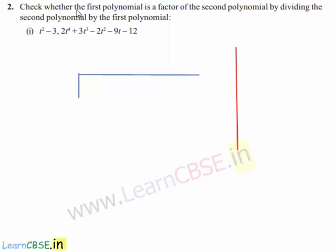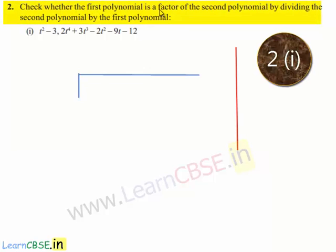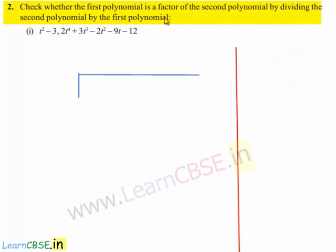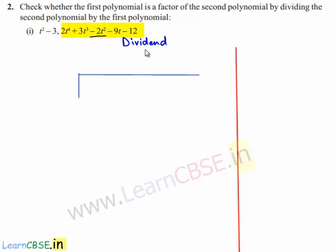Coming to the second problem: check whether the first polynomial is a factor of the second polynomial by dividing the second polynomial by the first polynomial. The second polynomial becomes the dividend and the first polynomial becomes the divisor. If we get remainder 0 on division of the second polynomial by the first polynomial, we say that the first polynomial is a factor of the second polynomial.